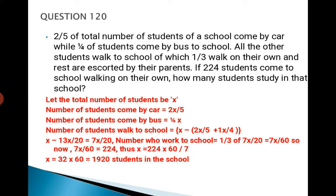Let the total number of students be x, because we don't know the total number of students, so we need to keep it the unknown variable. Number of students which come by car is 2x/5. Number of students which come by bus is x/4. Therefore, number of students which walk to school is x minus the addition of these two, that is 2x/5 plus x/4. When we do that, we find it is 13x/20.